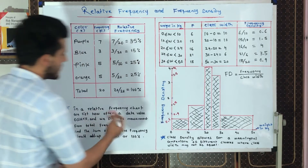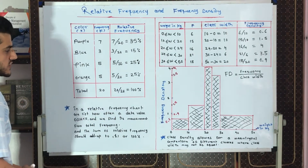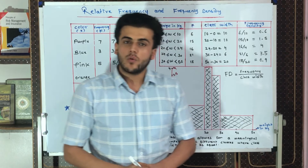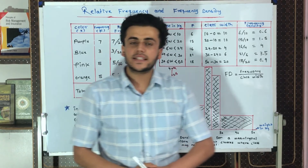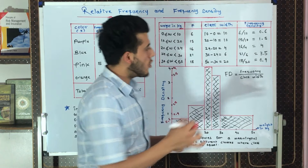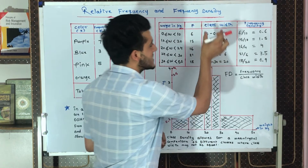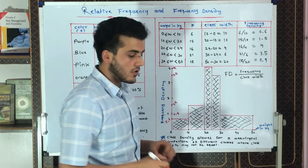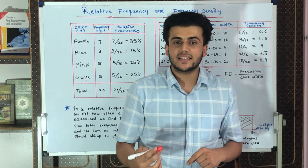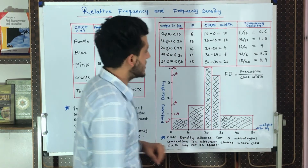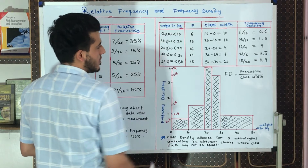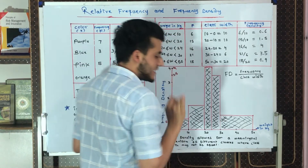The next topic is frequency density. We study frequency density to understand how the class width differs across class intervals. We use frequency density specifically when the class widths are different from one another.